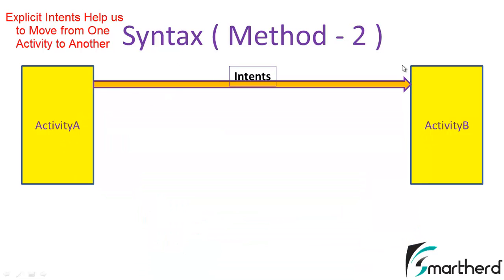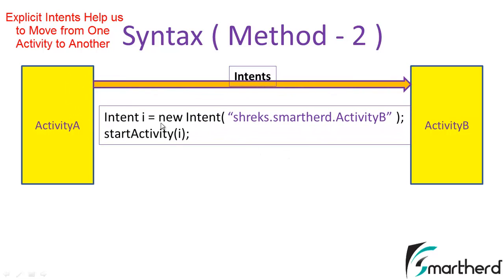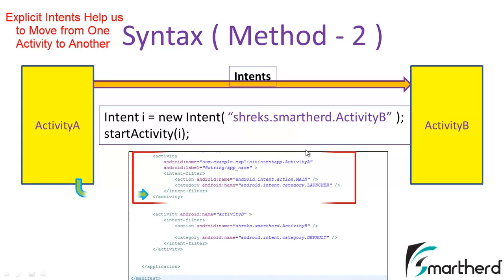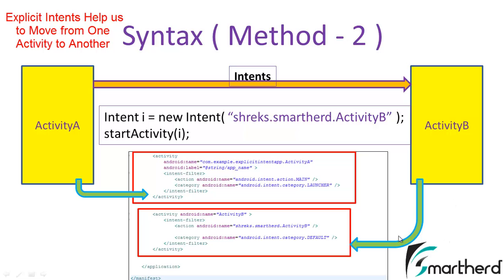The second syntax to move from activity A to activity B is: Intent i = new Intent("shrakes.smarter.activityB"). This string corresponds to what is written in the manifest — in the intent filter of activity B, the category is category.DEFAULT and the action name is set to shrakes.smarter.activityB. Note that this string can be anything you like; it does not have to be shrakes.smarter.activityB. The string in the intent must match the action name in the manifest, and whenever you start this intent it will navigate from activity A to activity B.